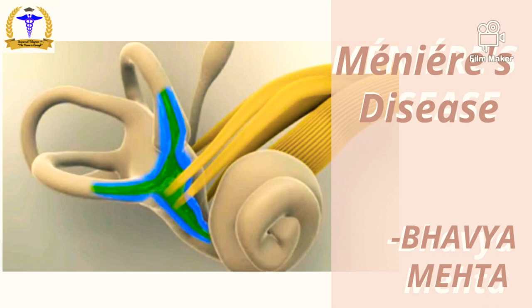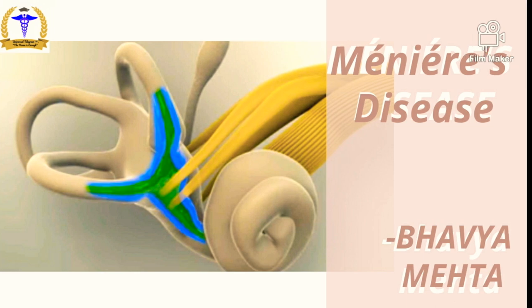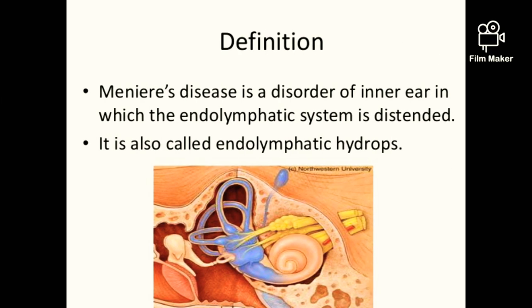Let's learn about what is Meniere's disease. It is named after French physician Prosper Meniere. Basically, Meniere's disease is a disorder of the inner ear in which the endolymphatic system is distended. It is also called endolymphatic hydrops.